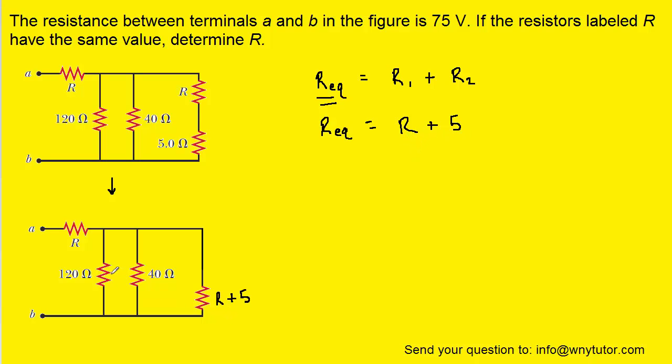We will next notice that there are three resistors in parallel with each other. There is this resistor here, this one here, and then the equivalent resistor that we just came up with here. Now when resistors are in parallel, we cannot simply add their resistances. There's a different formula to follow.